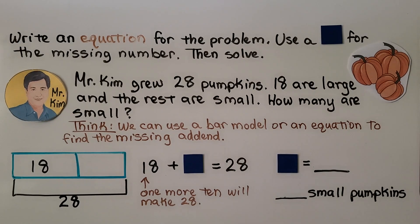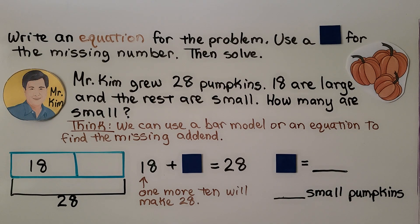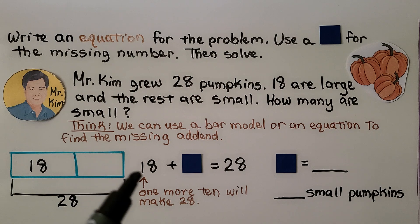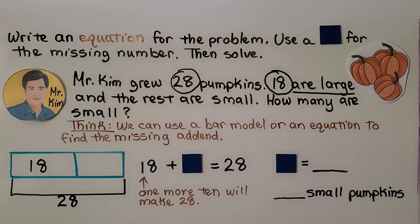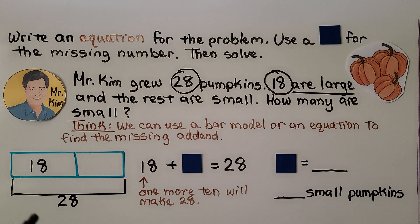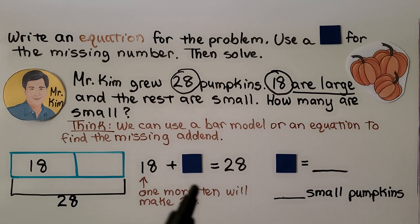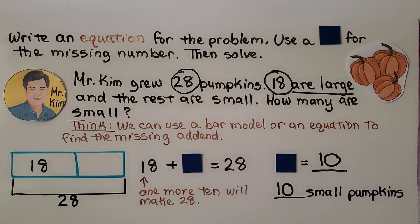Write an equation for the problem, use a box for the missing number, and then solve. Mr. Kim grew 28 pumpkins. 18 are large and the rest are small. How many are small? We have 28 in all — that's the whole. We know 18 are large. We need to find how many are small that, when added to 18, will equal 28. If we look at 18, it needs one more 10 to make 28. So 18 plus 10 is equal to 28, meaning there are 10 small pumpkins.